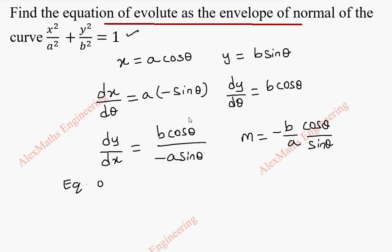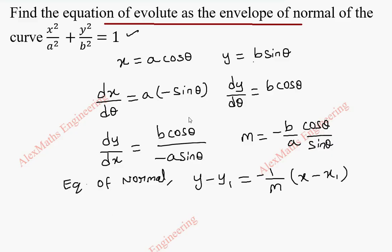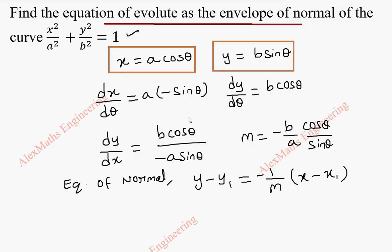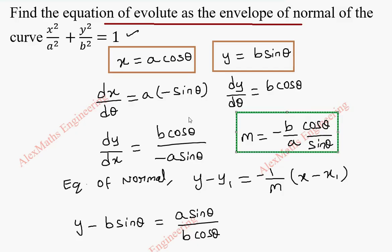After this, we have to write the equation of the normal. The equation of normal by formula is y minus y1 equal to minus 1 by m into x minus x1, where x1 and y1 are the point on the ellipse. So we take y minus b sine theta equal to minus 1 by m. The negative reciprocal of m gives a sine theta by b cos theta. I have directly substituted minus 1 by m here. So we take reciprocal and since there is already a minus, it becomes plus, into x minus a cos theta.